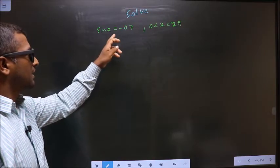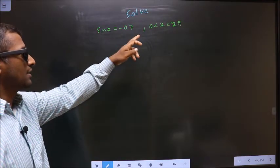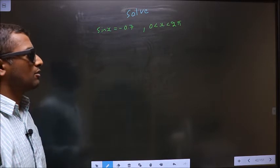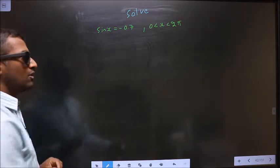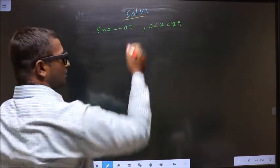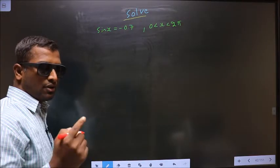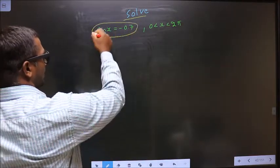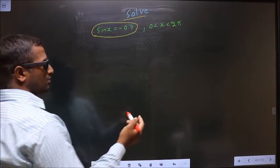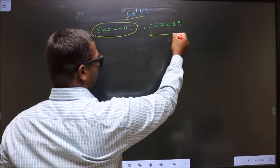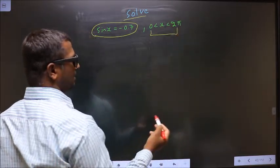Solve sin x equal to minus 0.7 where x lies between 0 to 2π. They told you to solve, so you should find the values for x satisfying this equation and it should lie in this interval 0 to 2π.